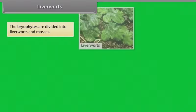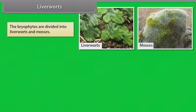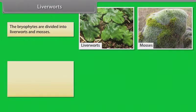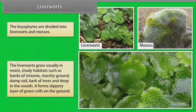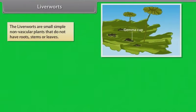Liverworts. The bryophytes are divided into liverworts and mosses. The liverworts grow usually in moist shady habitats such as banks of streams, marshy ground, damp soil, bark of trees and deep in the woods. It forms slippery layer of green cells on the ground.